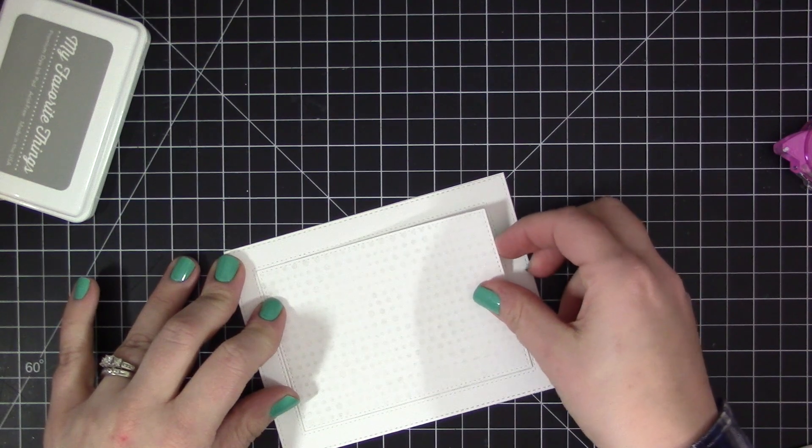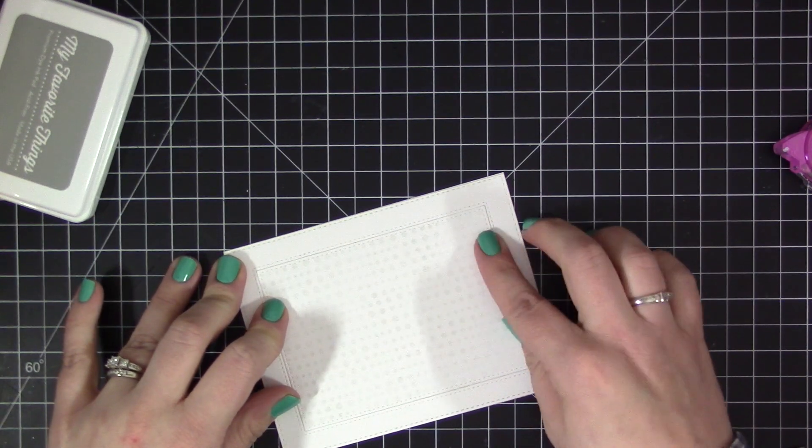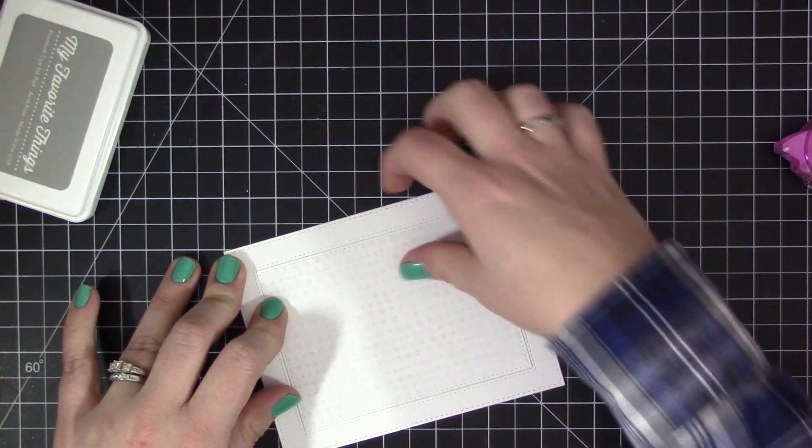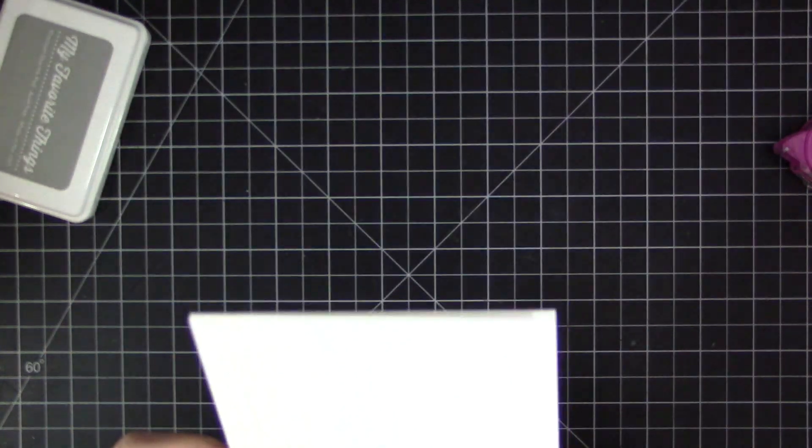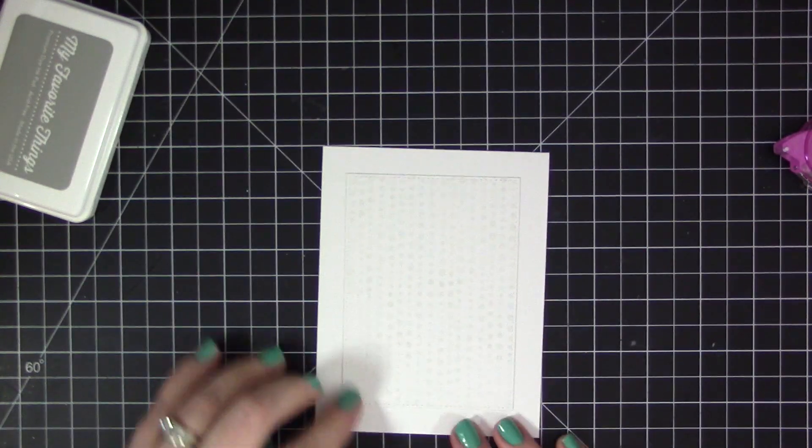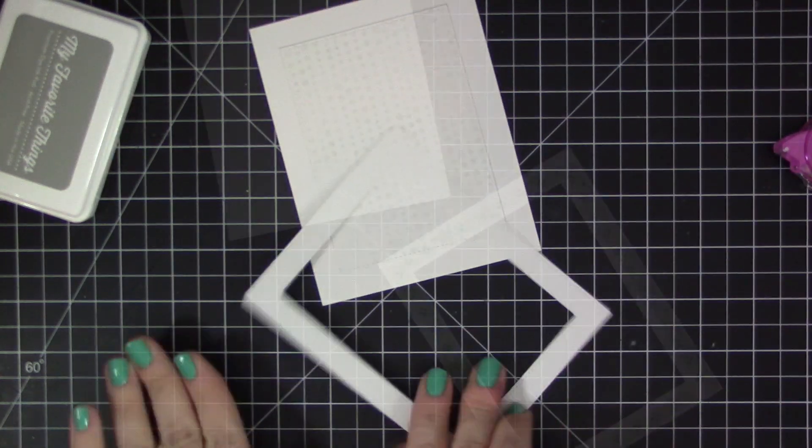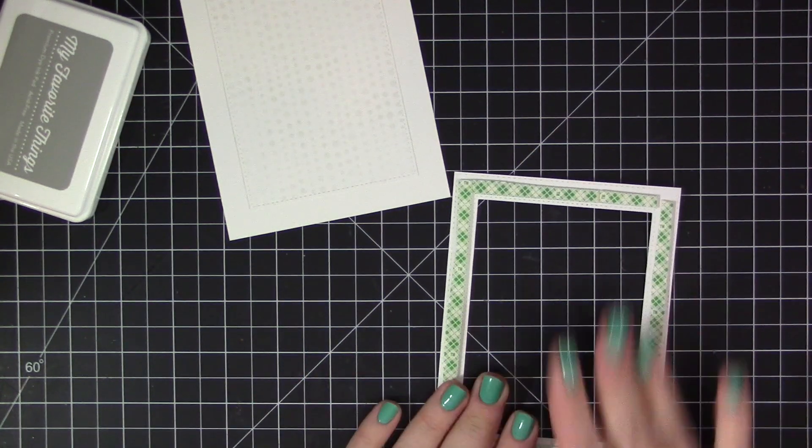Now I have the outside frame just positioned on top of my card base—it's not adhered down—and I put the center piece inside with adhesive on it. This helps me line this up perfectly so that I can get that center rectangle adhered exactly where I need it to be.